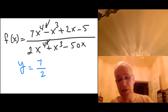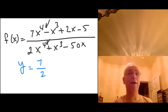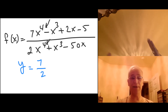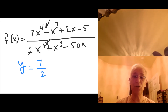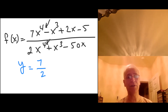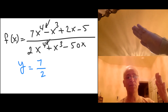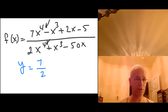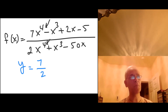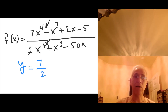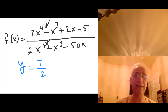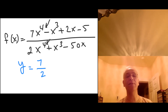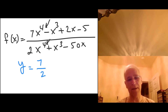One important thing to note: unlike vertical asymptotes, your function can touch the horizontal asymptote. We have functions that sometimes go through the horizontal asymptote and bounce back several times. So the answer to 'can the graph of a rational function touch or cross the horizontal asymptote?' is yes, it can. I hope you find this video helpful. Thank you.